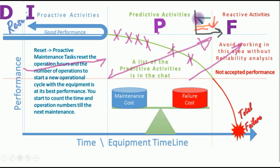Now you know the status of the equipment. It starts to deteriorate without measuring vibrations, without measuring ultrasonic, without measuring anything extra — you can see that your equipment starts to deteriorate. Then you can go and make an inspection or plan an inspection in any stoppage, without using any extra tools.